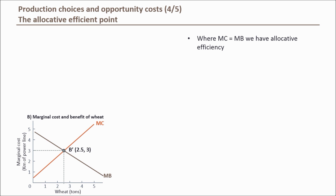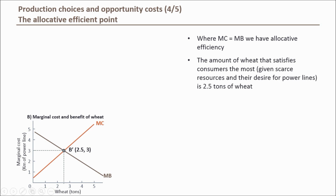So where the economy is willing to give up an additional 3 kilometres of power lines for an additional tonne of wheat, and where the additional tonne of wheat delivers the same benefit as an additional 3 kilometres of power lines — that is where the allocative efficient combination lies. Given the economy's desire for a mix of power lines and wheat, and given that all productive resources are used, the amount of wheat this economy wants to consume is 2.5 tonnes.